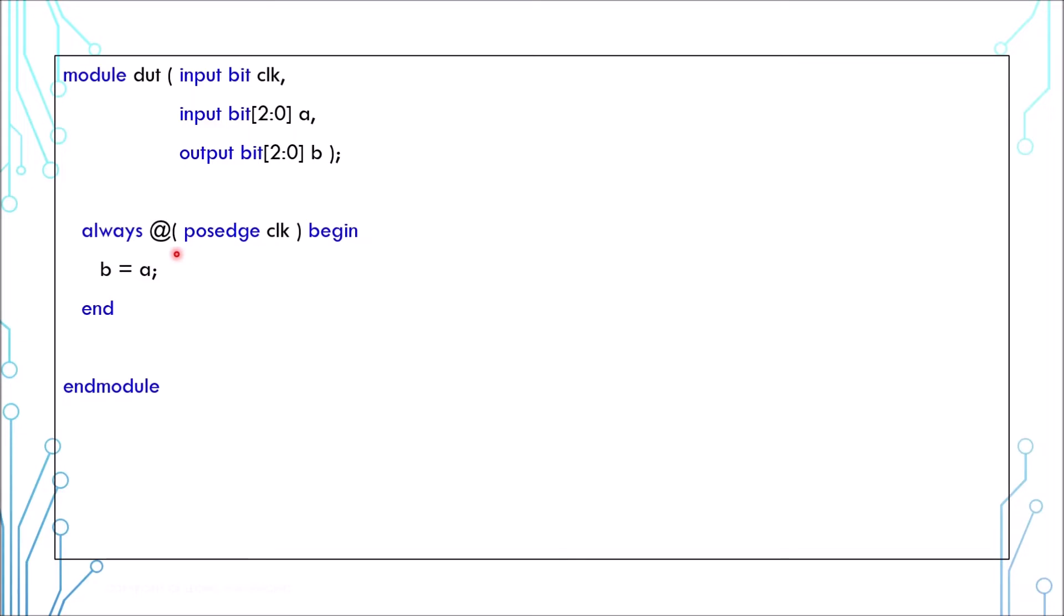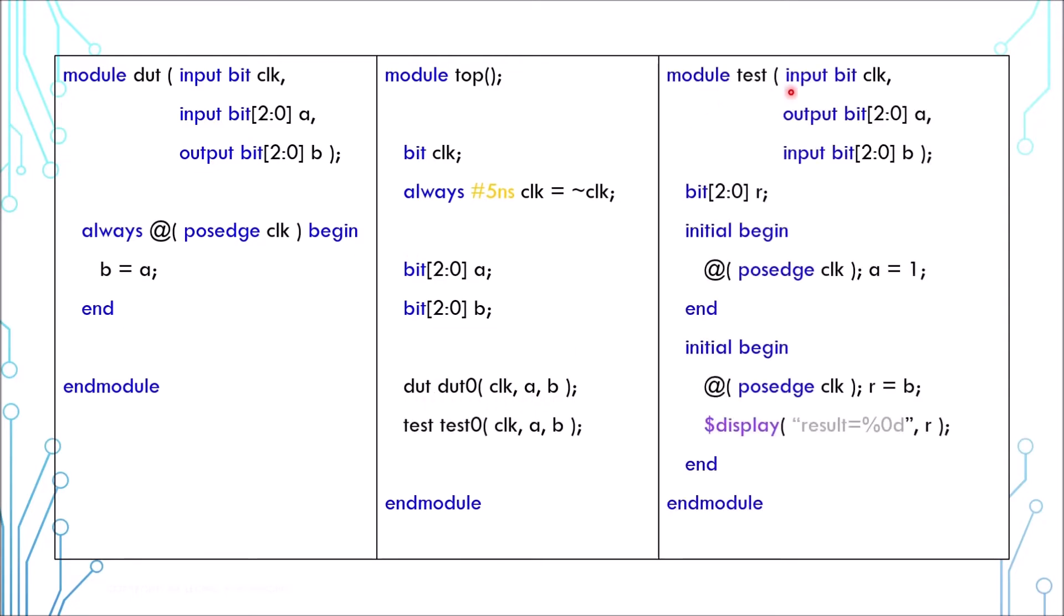This is a top module. It has a clock and wires A and B, and here it instantiates the design module. This is a test module. It is used to drive stimulus into the design and monitor its output, and this is a basic test bench.